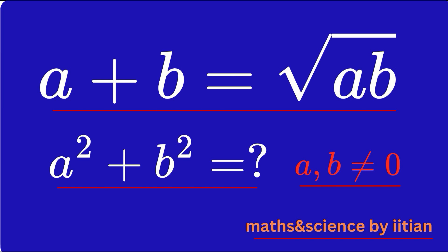That means a non-trivial solution is required. When a and b are equal to 0, then the right-hand side and left-hand side are both 0. We don't want that situation — we want some meaningful solution. Let us proceed further.